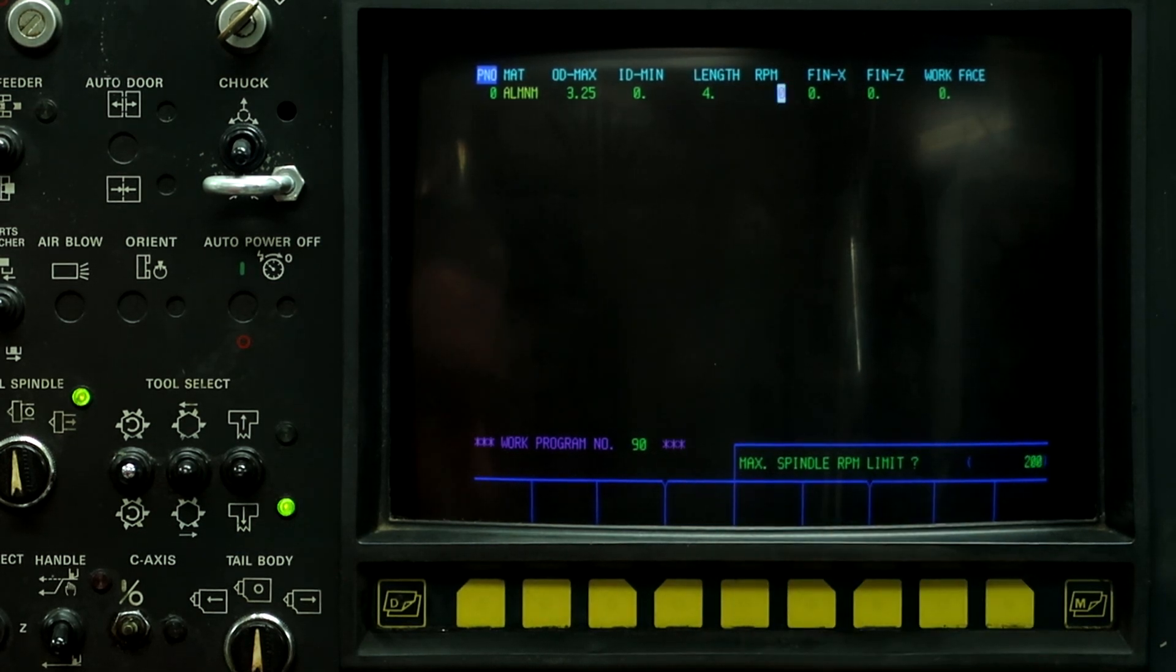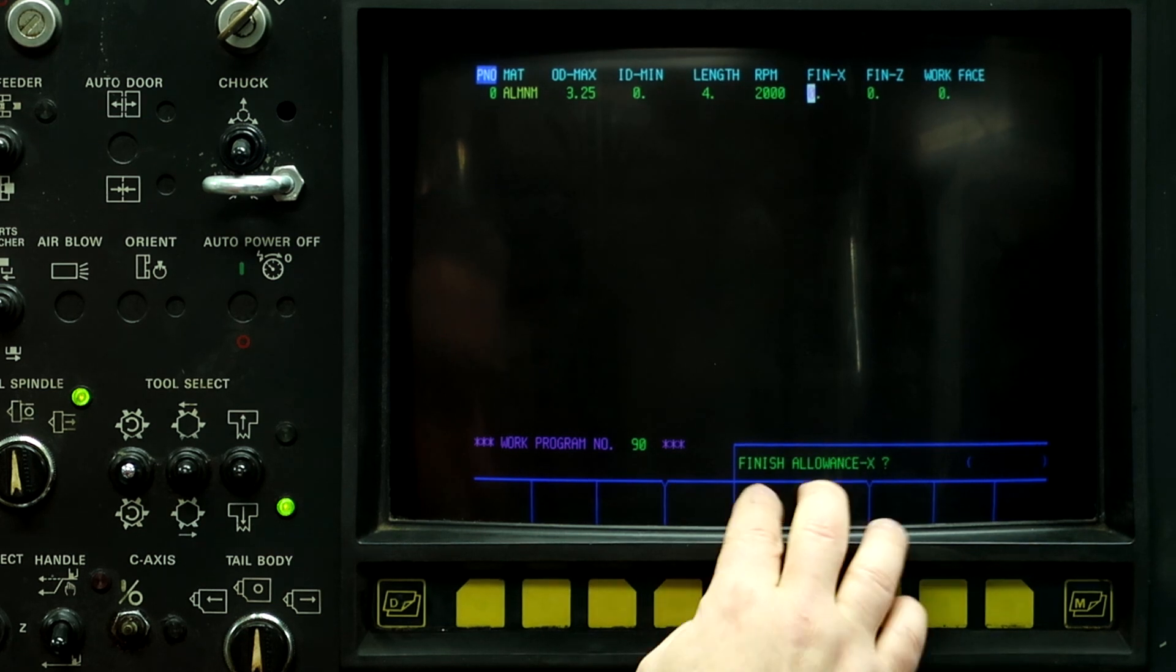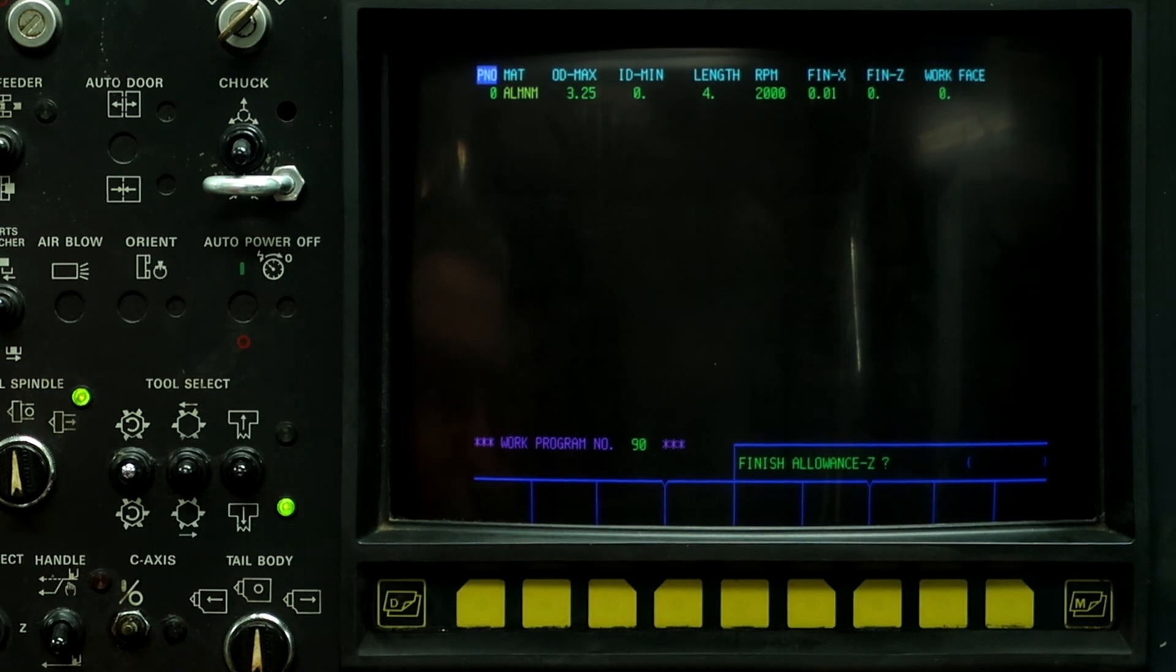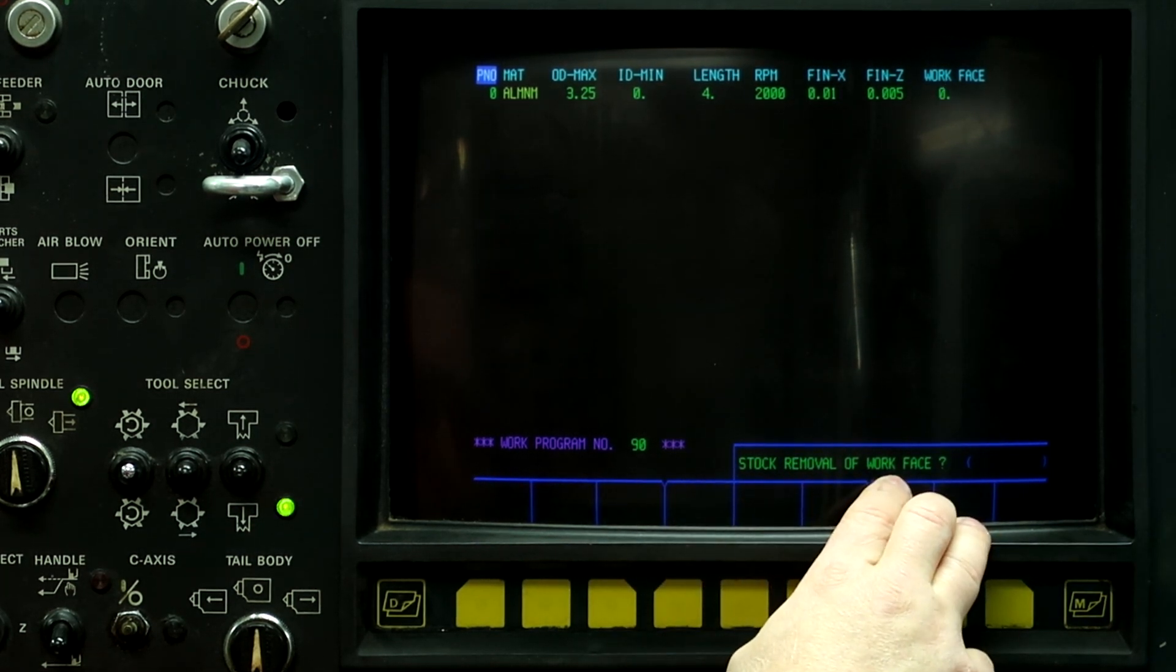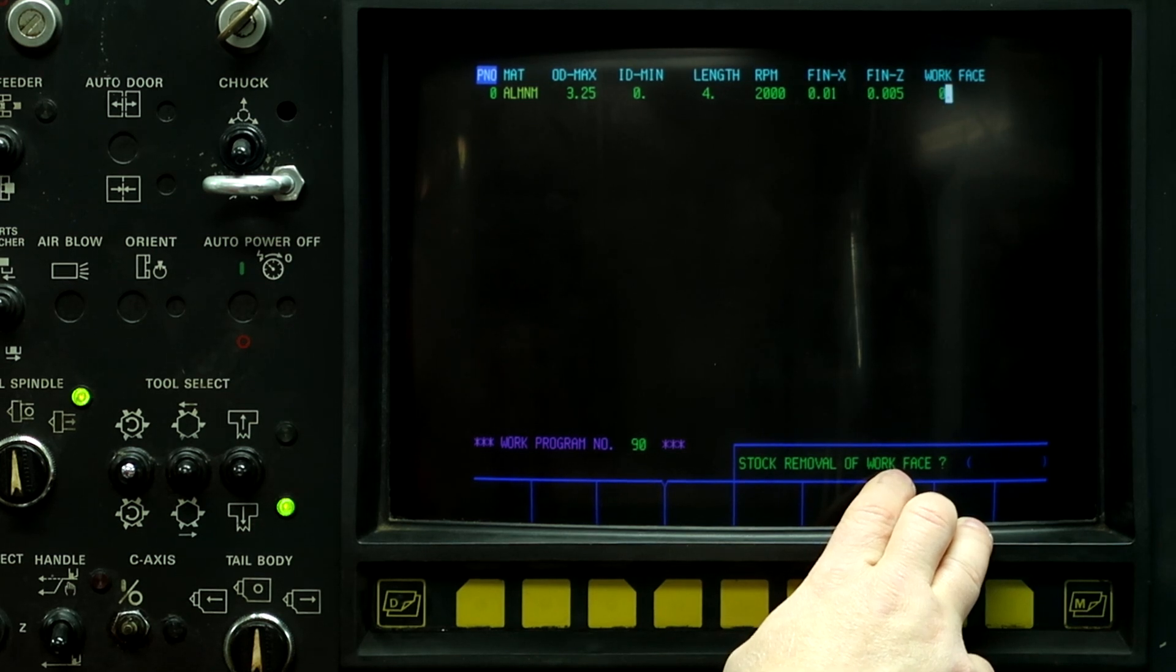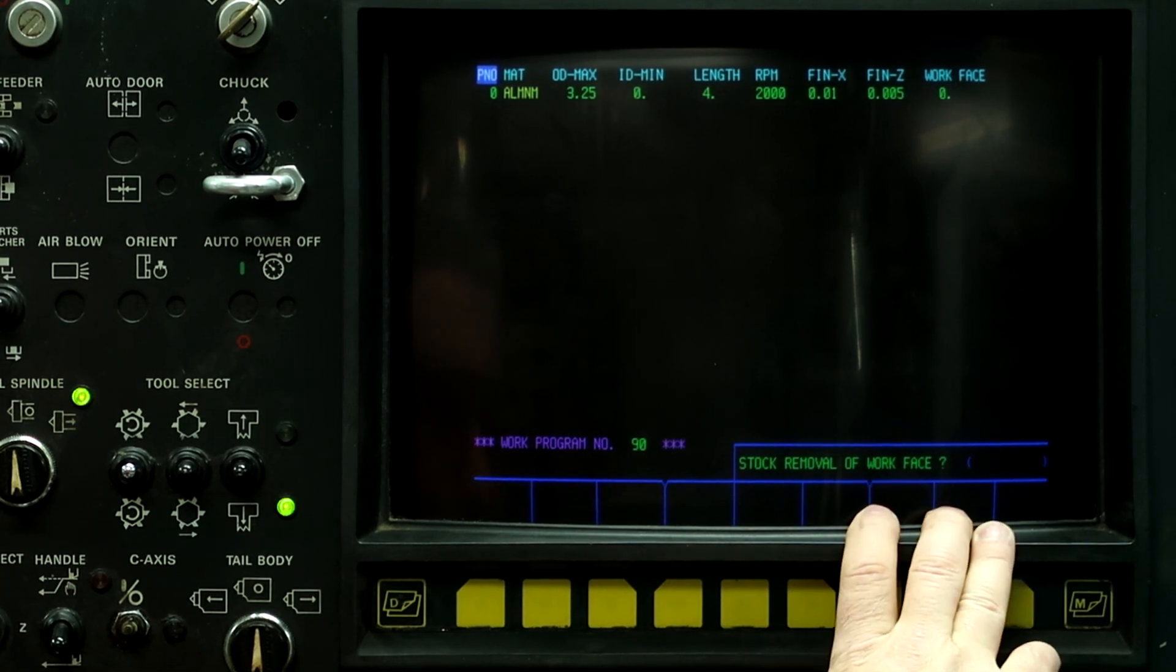Spindle limit is 2,000 RPM. Finish allowance on X is 10 thousandths. 5 thousandths on Z. Stock removal of work face is zero because I've already faced off this part and I'm recycling old stock for this particular program. So down arrow.